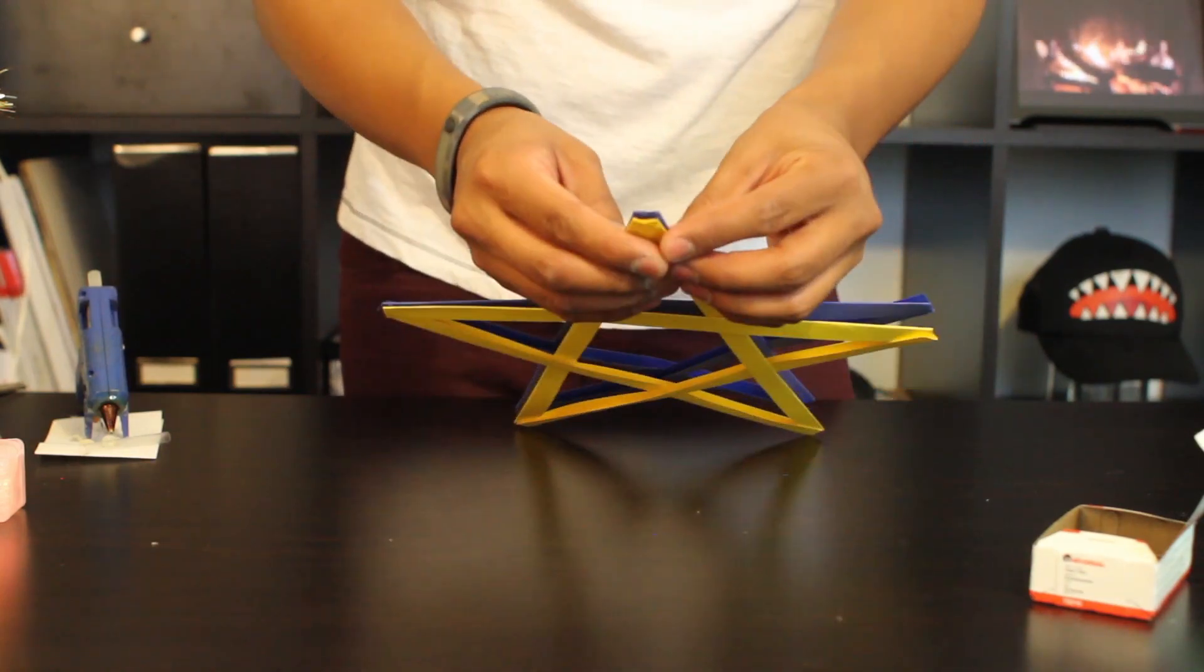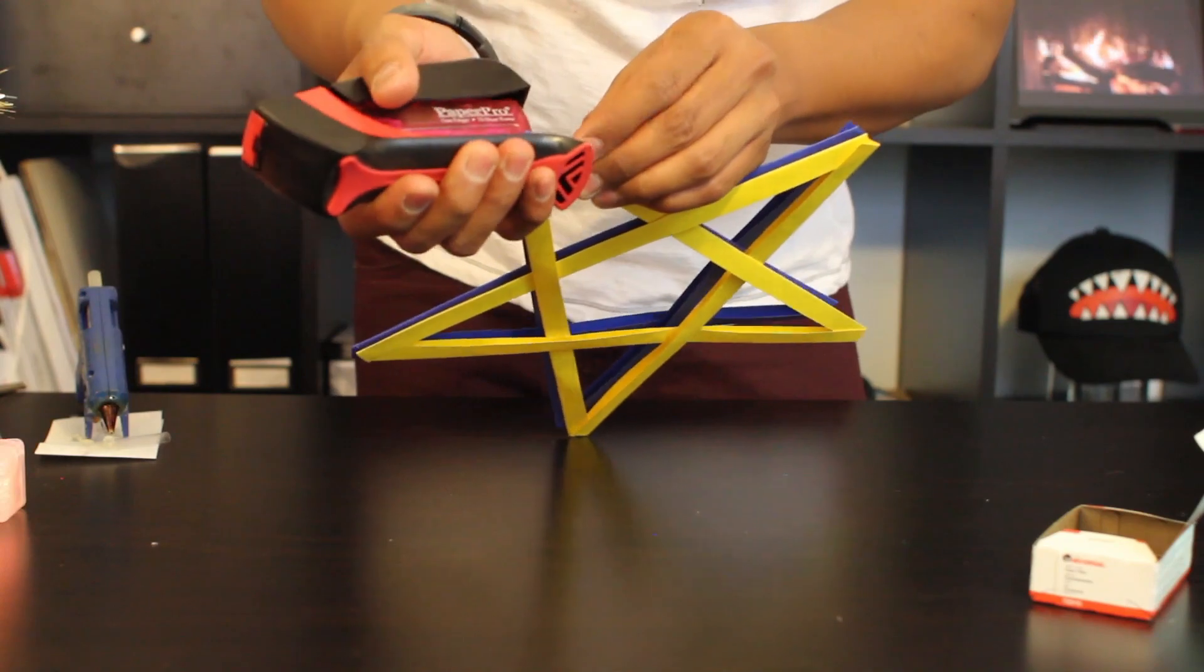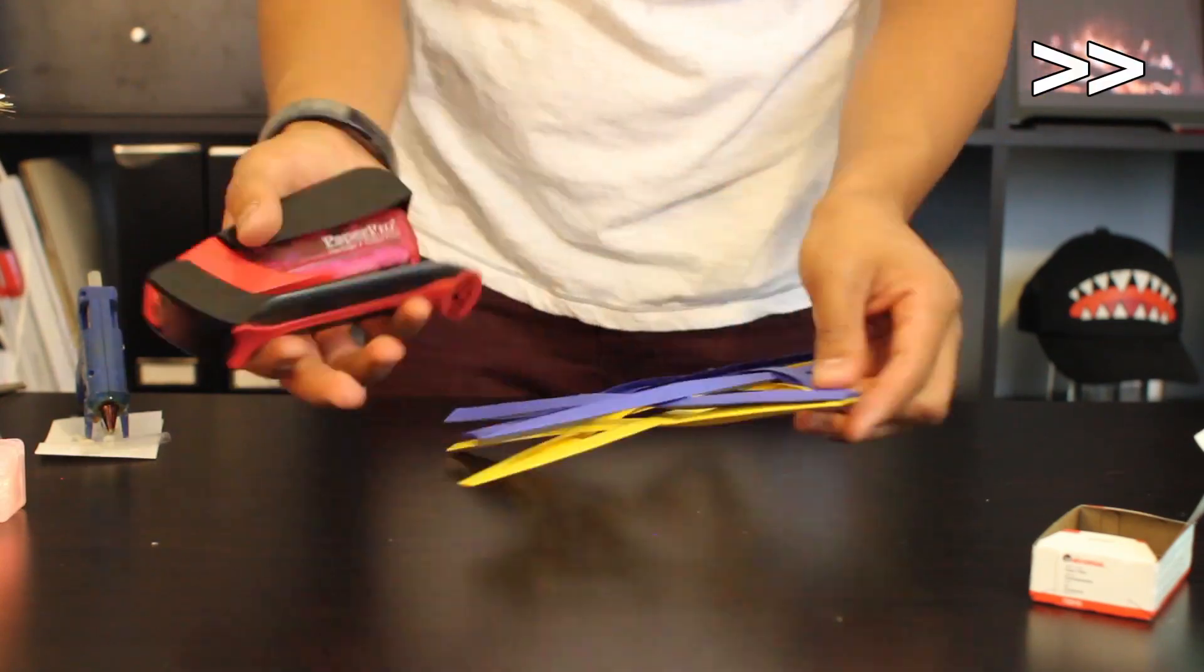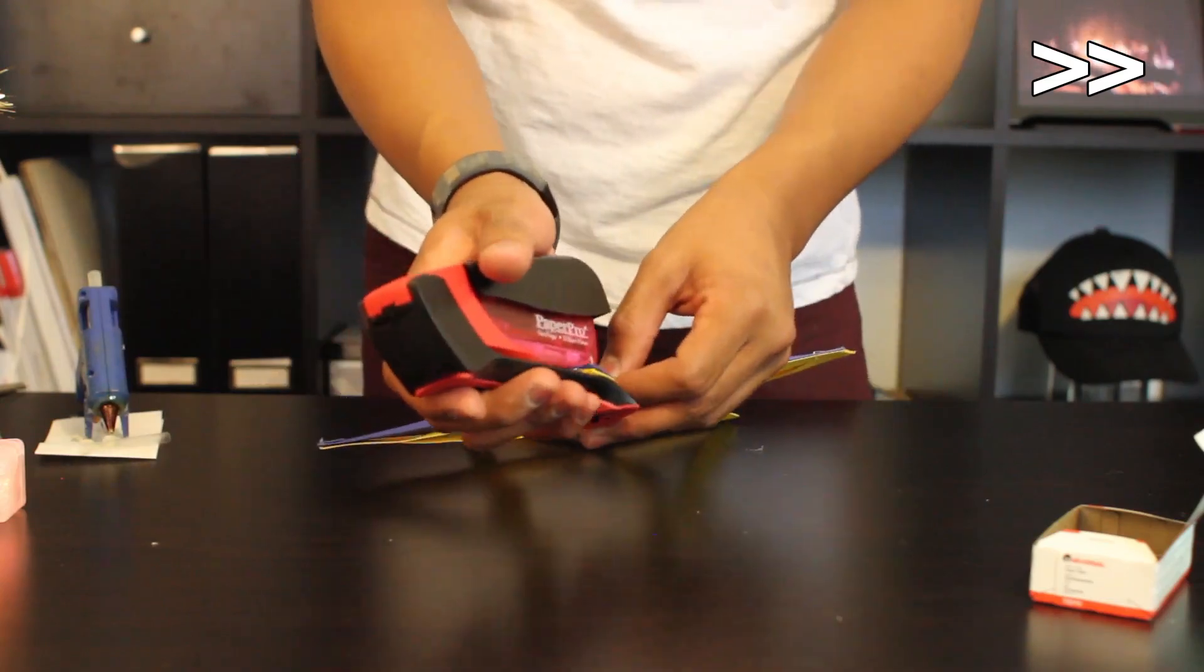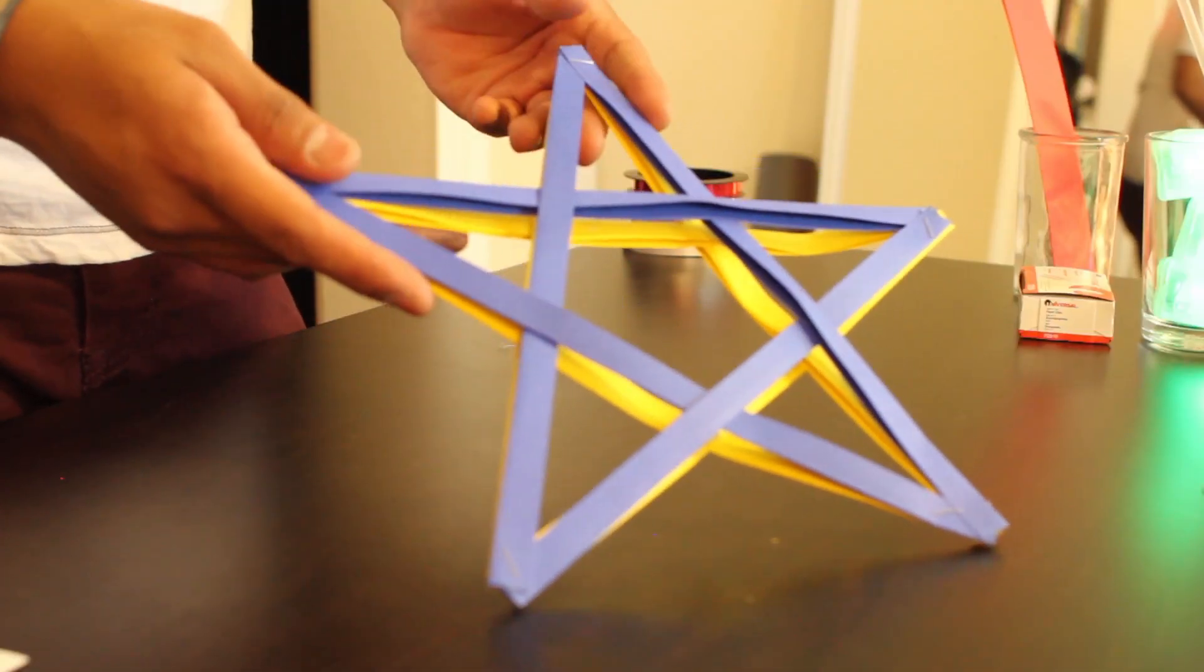Once you've made your two stars, go ahead and attach them by stapling the edges together.